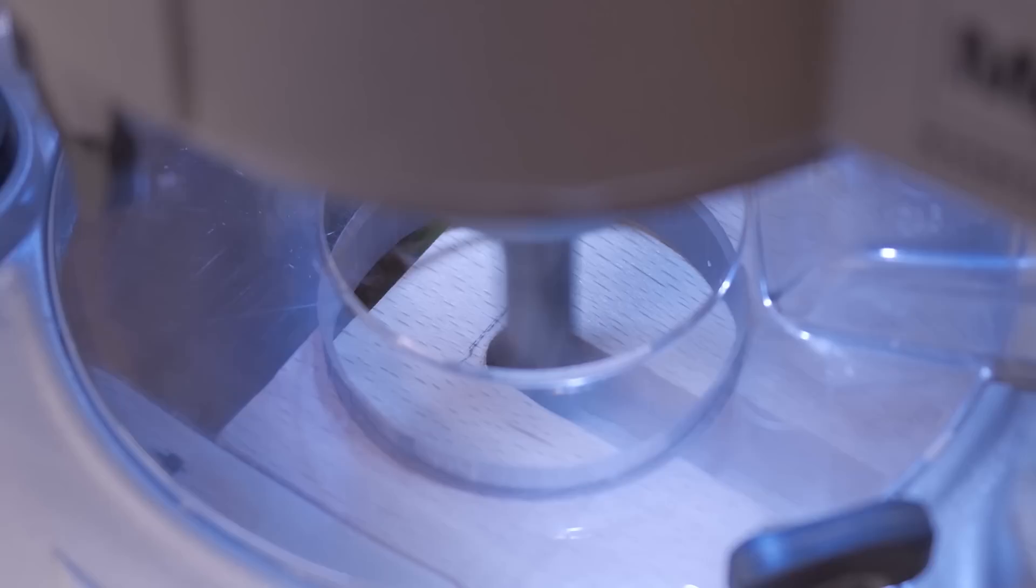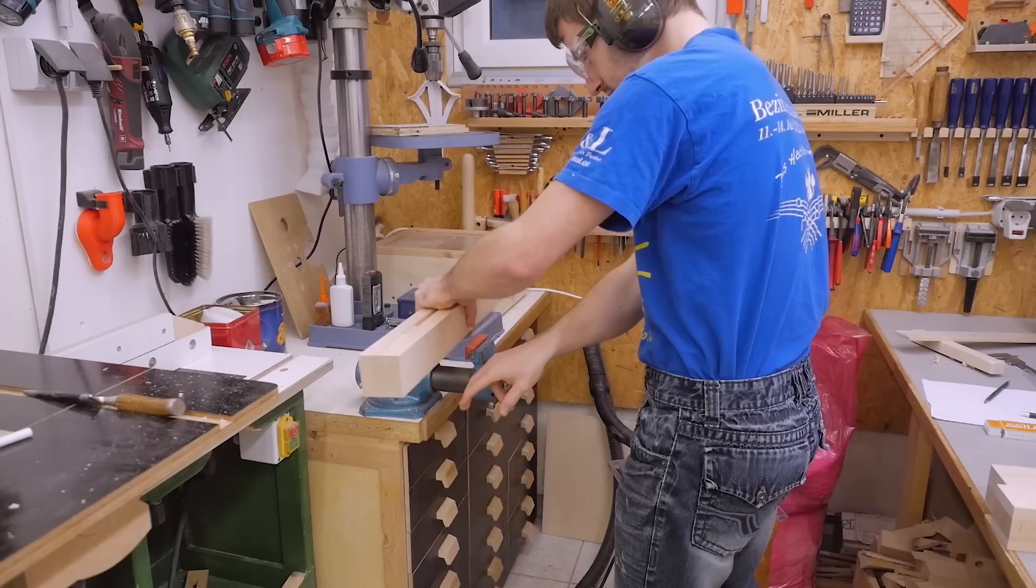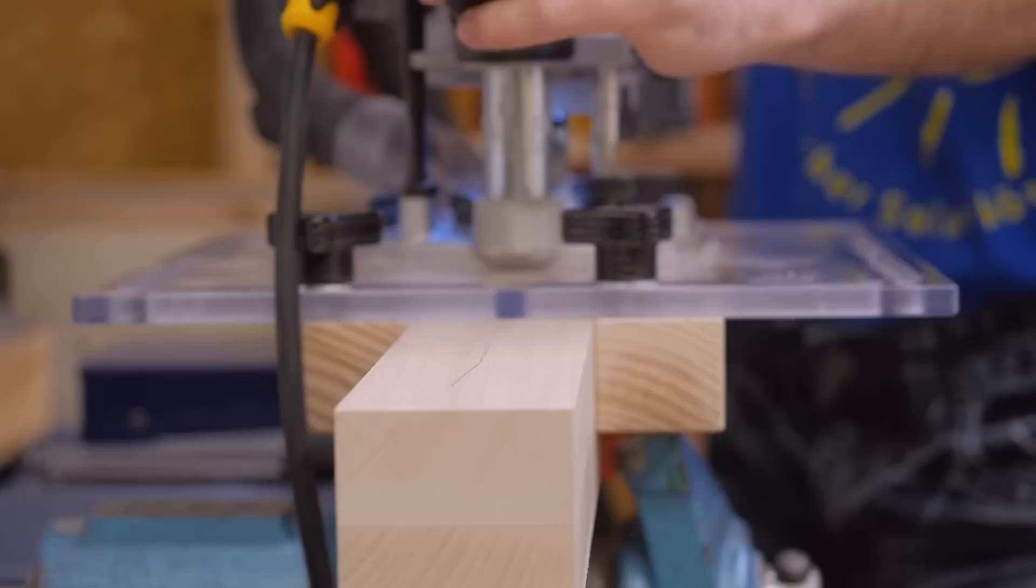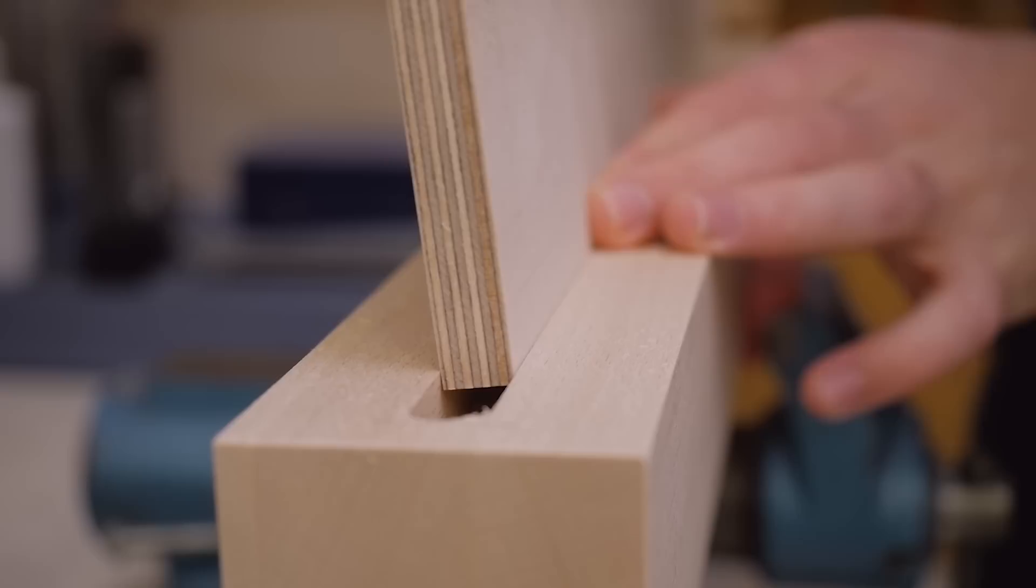I made a mark at the start and end location of the slot. Here I then flipped the piece around to get the slot centered again. Off camera I already adjusted the fences of the jigs so that the slot will have the correct size.